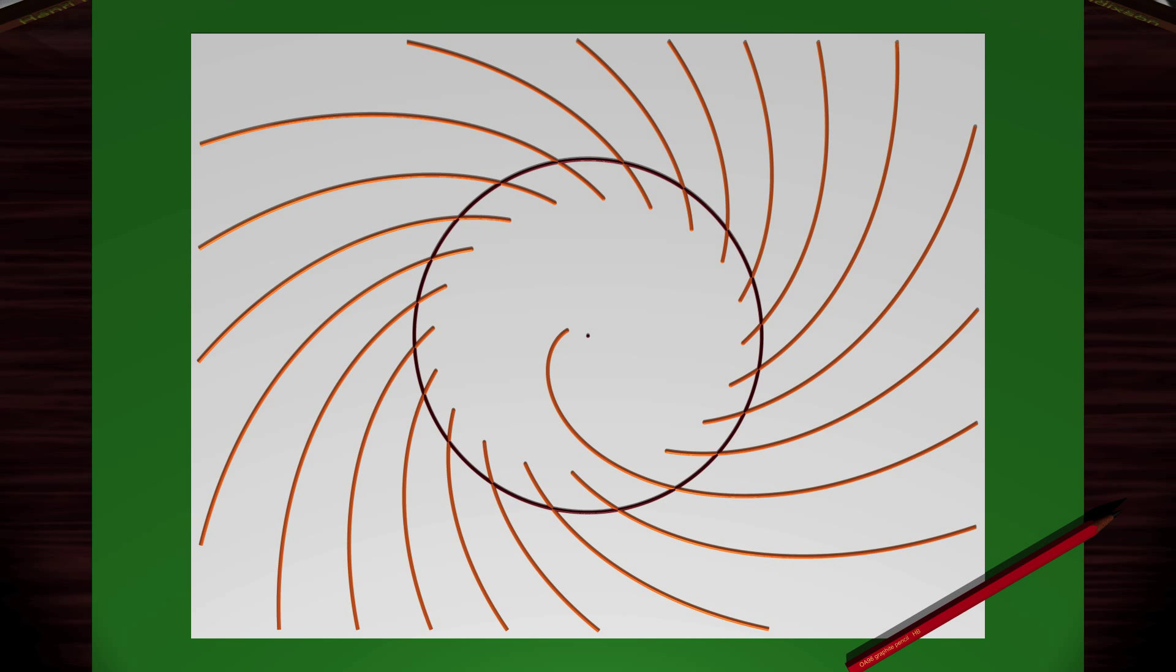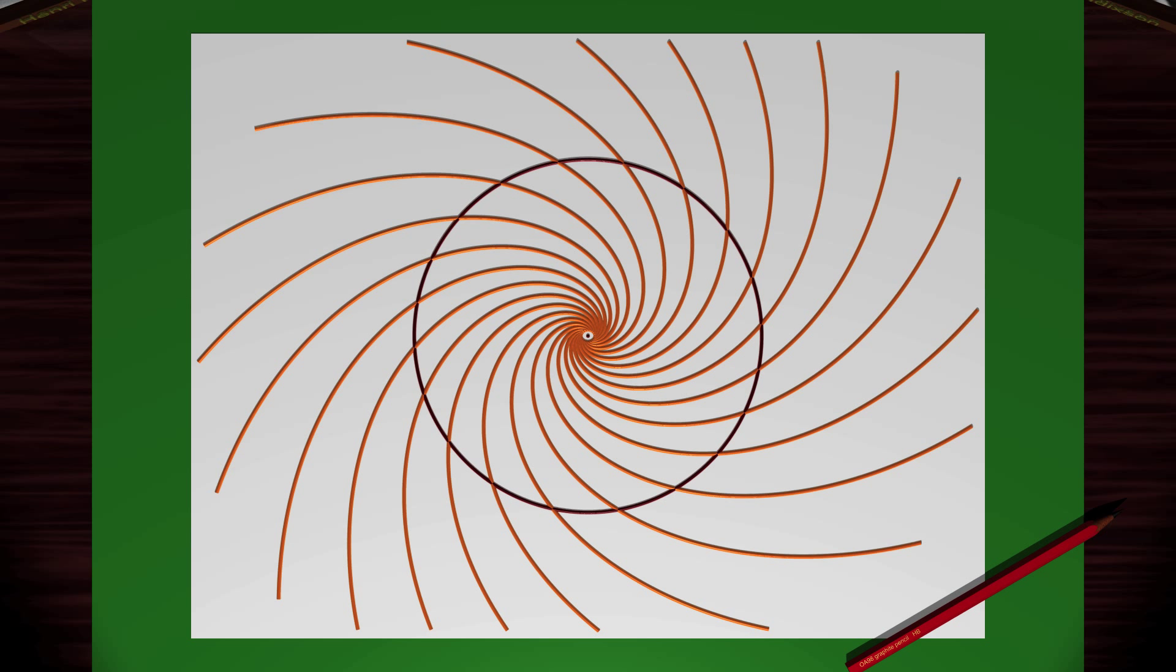The trajectory will either get very close to an equilibrium position, as we see here—this is what we saw for the damped pendulum—or it must approach a limit cycle.